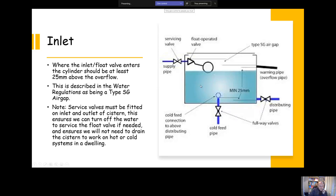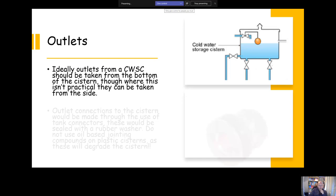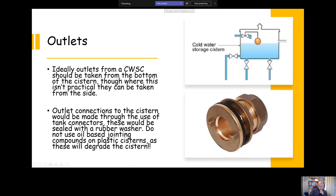For outlets, ideally, this is a bit of a tricky one because it's not something that people always do in real life, but according to the water regulations, ideally we should take all connections from the base of the system. This isn't always practical. In reality, most people will take their connections from the side, but it's recommended in the water regulations that we take all of our connections from the base. This is a tank connector here and this is what we'd use to make our connections. It would be sealed with a rubber or a plastic washer. Don't use oil-based jointing compounds because they will degrade the system. Anything oil-based will break down plastic.